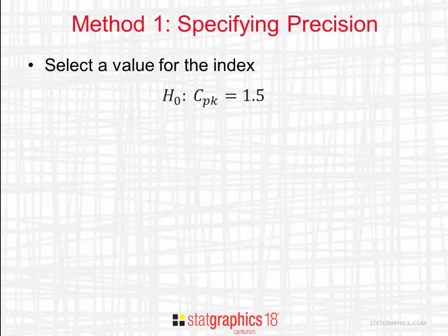StatGraphics 18 provides two methods for determining adequate sample sizes. The first method is specifying the precision of your estimator. It works as follows.